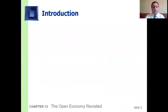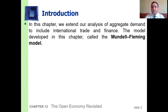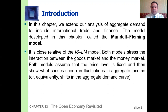In this chapter we extend our analysis of aggregate demand to include international trade and finance. The model developed in this chapter, called the Mundell-Fleming model, is a close relative of the IS-LM model, as both stress the interaction between the goods market and money market. Both models assume that the price level is fixed and show what causes short-term fluctuations in aggregate income, or equivalently shifts in the aggregate demand curve.